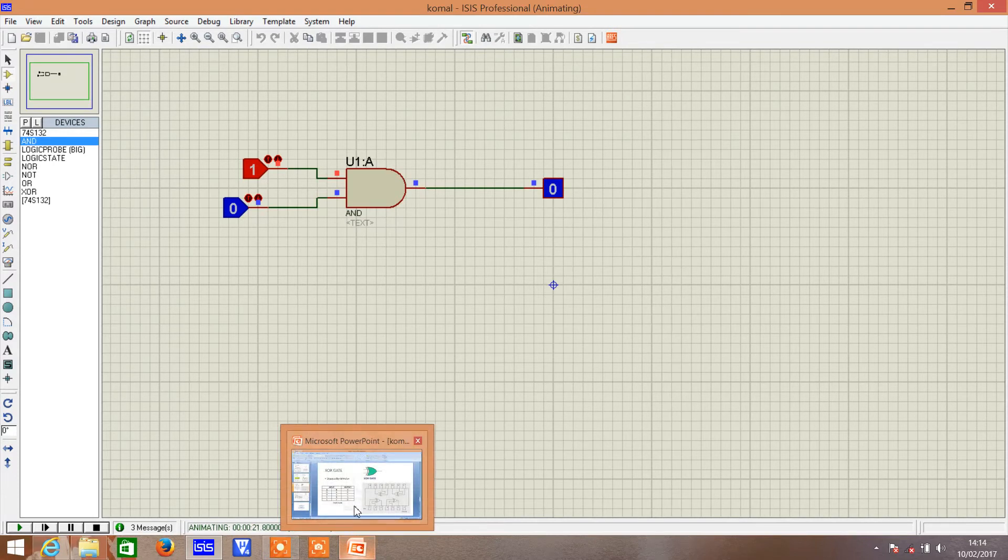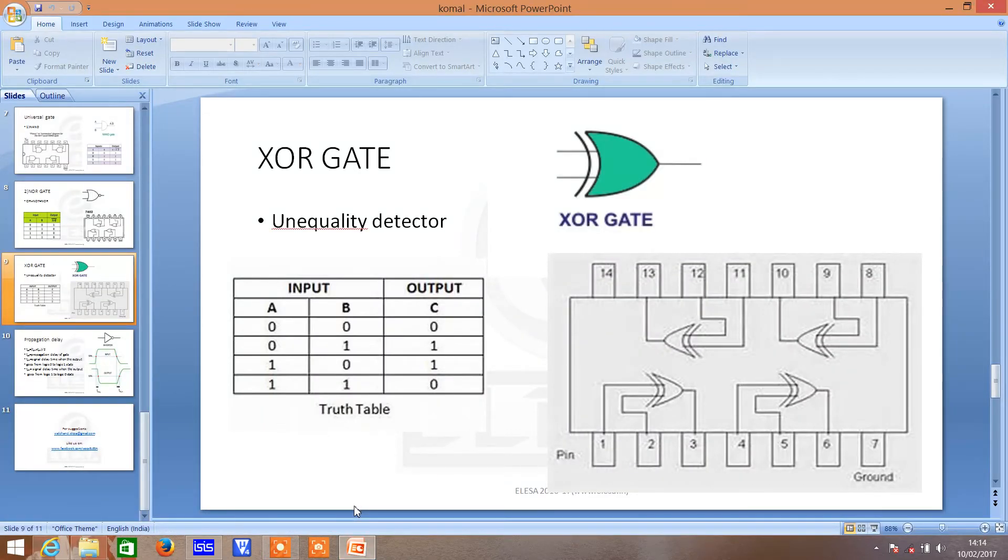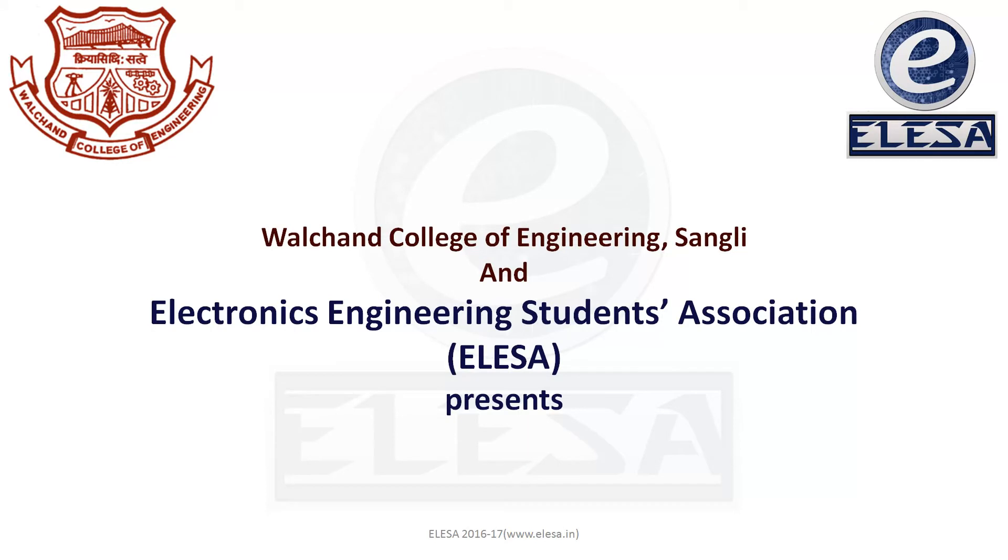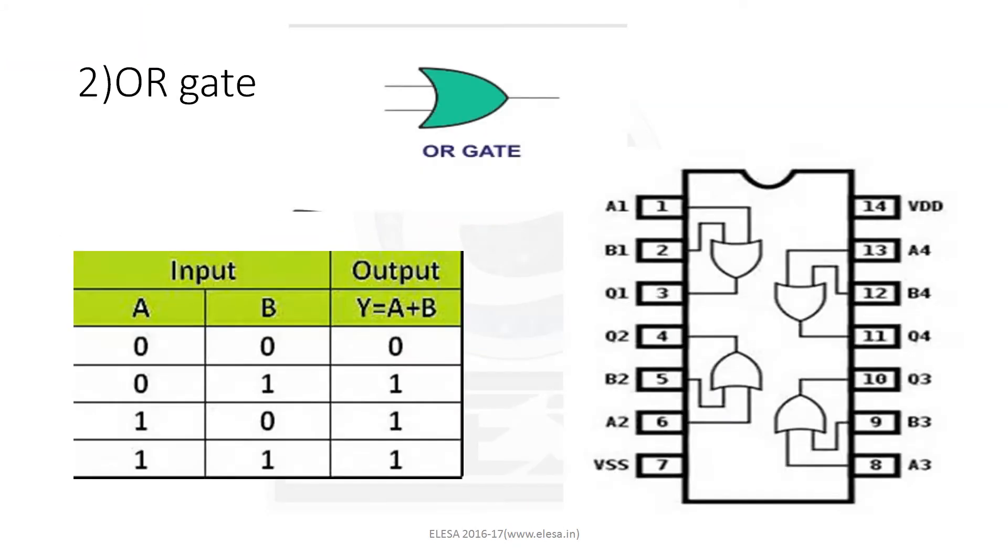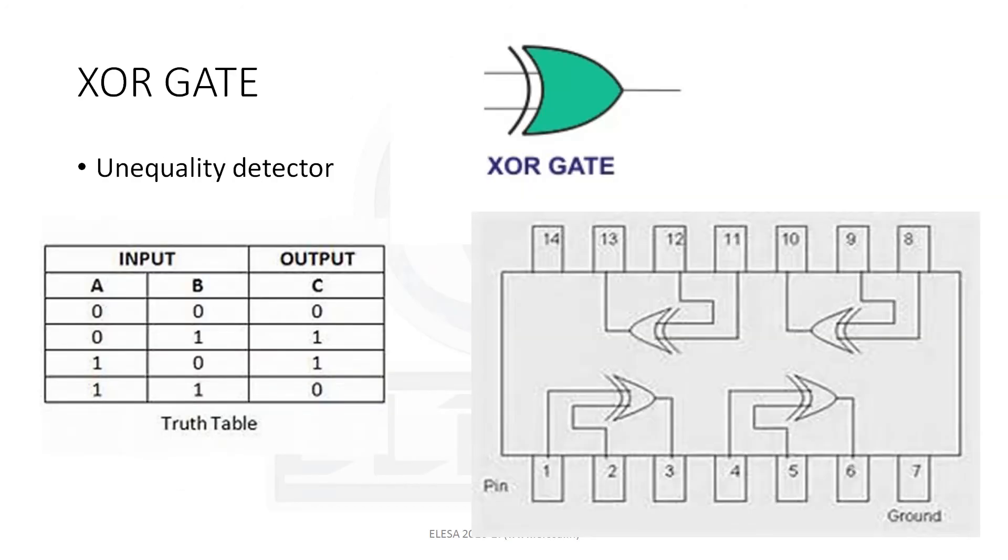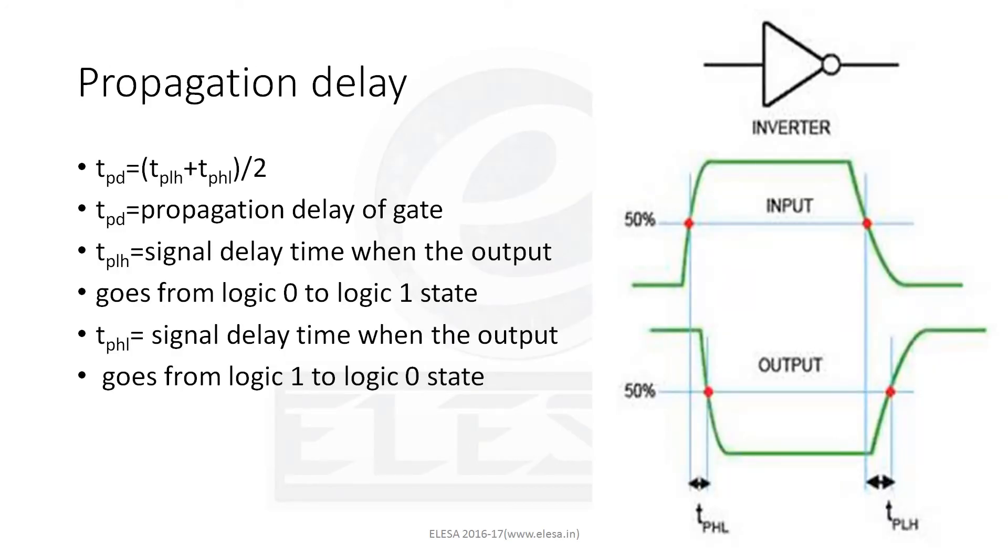This is all about logic gates. Now, let's have a look at propagation delay of gate. A pulse through a gate takes a certain amount of time to propagate from input to output. This interval of time is known as propagation delay of gate, and it is expressed as here. This is the formula for propagation delay.